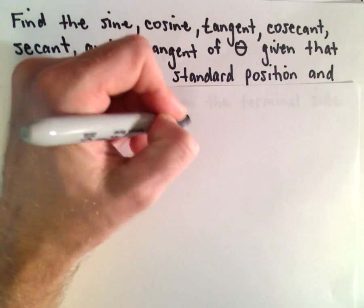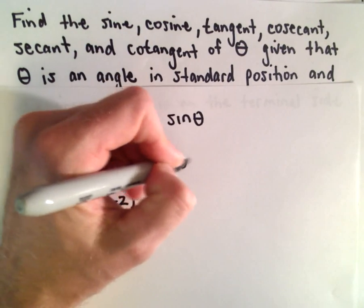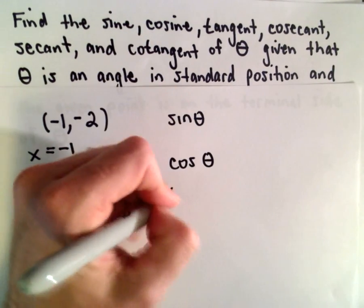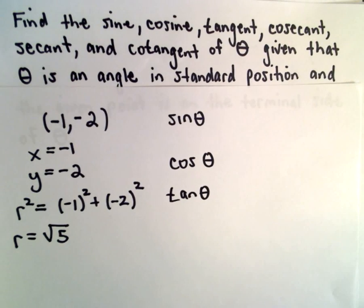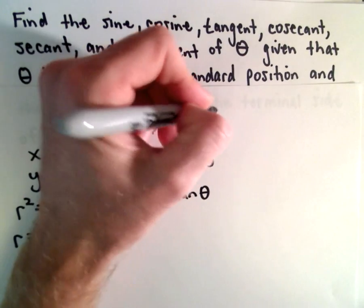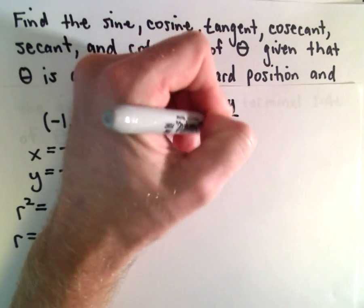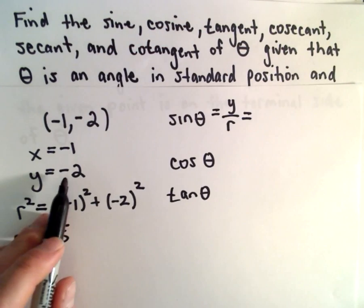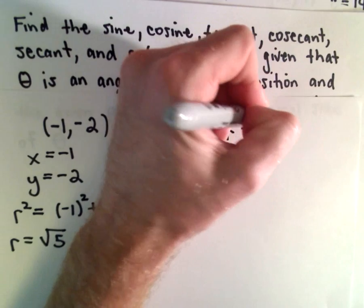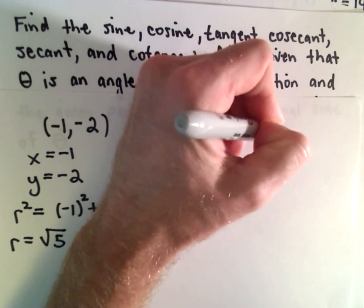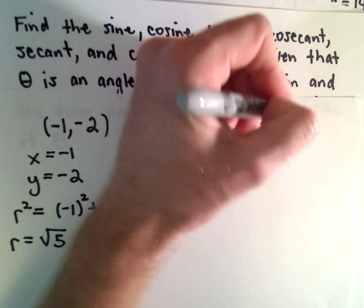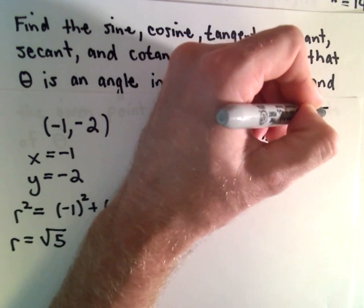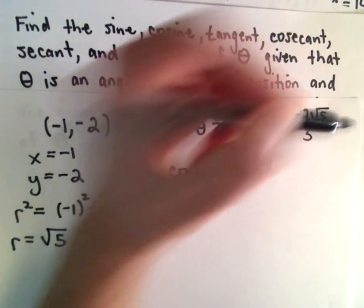So let's see sine of theta, cosine of theta, tangent of theta. We can just simply use our formulas. Sine of theta is y divided by r. Again y is negative 2, r is the square root of 5. And if we multiply the numerator and denominator by square root of 5 we'll get negative 2 times the square root of 5 divided by 5.